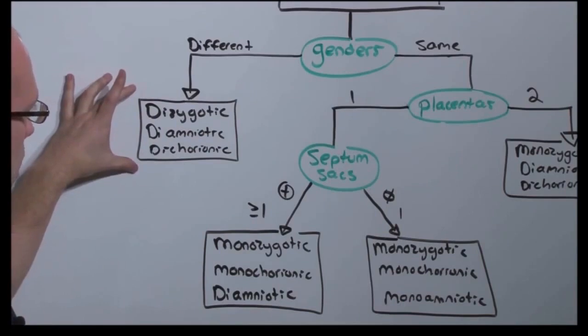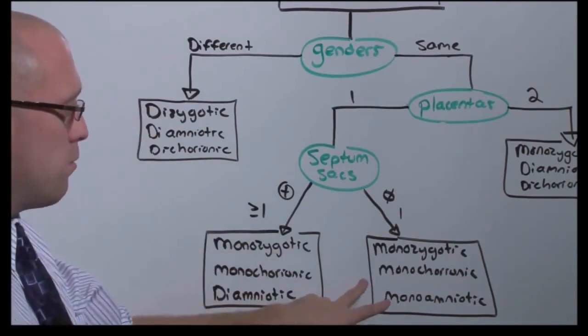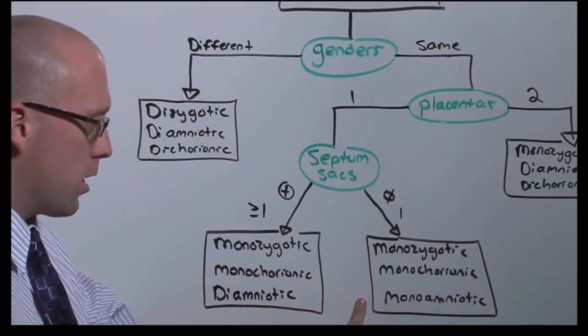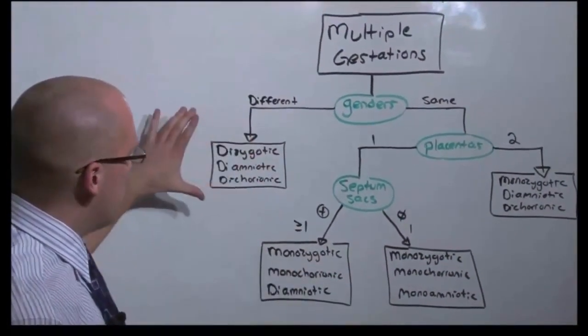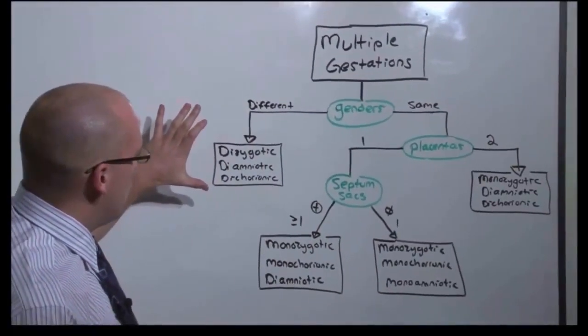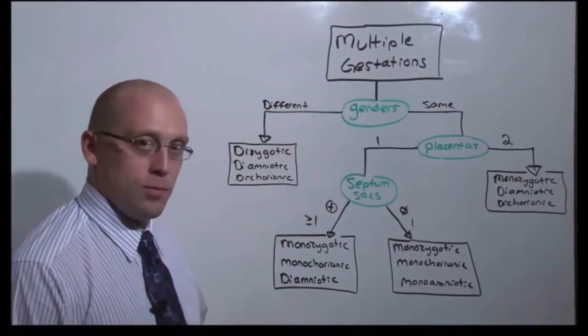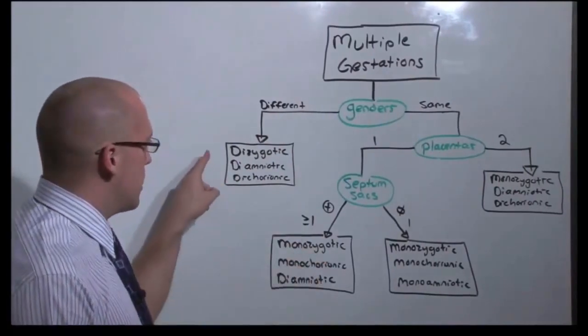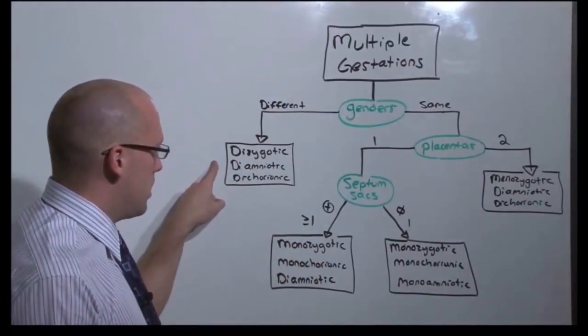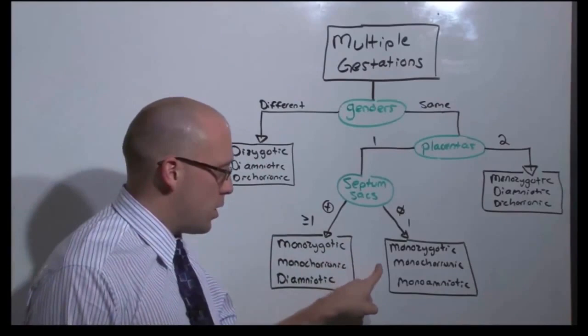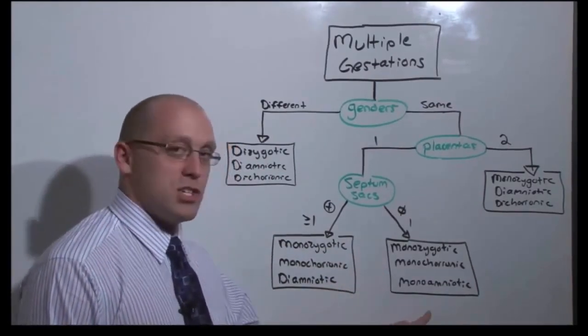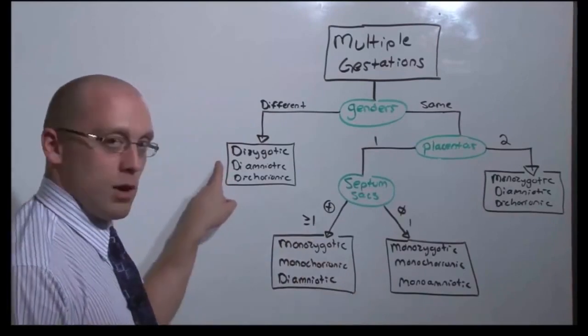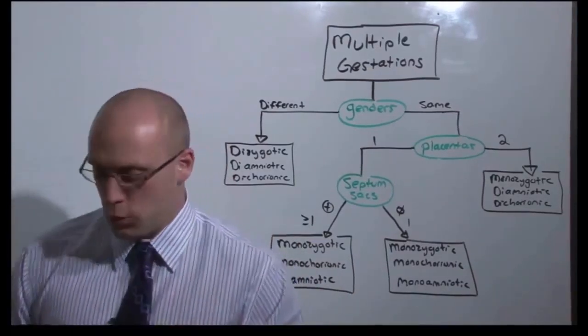Dizygotic, diamniotic, dichorionic twins have the lowest risk. Monozygotic, monochorionic, monoamniotic twins have the highest risk. And any risk you learn about the one above it is conferred to those below. That is, all of the risk that dizygotic, diamniotic, dichorionic has, monozygotic, monochorionic, monoamniotic has. But these guys have additional risk to the ones above. So let's talk about each one individually.